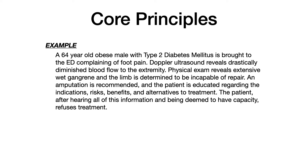Here's the example. A 64-year-old obese male with type 2 diabetes mellitus is brought to the emergency department complaining of foot pain. Doppler ultrasound reveals drastically diminished blood flow to the extremity. Physical exam reveals extensive wet gangrene and the limb is determined to be incapable of repair. An amputation is recommended and the patient is educated regarding the indications, risks, benefits, and alternatives to treatment. The patient, after hearing all of this information and being deemed to have capacity, refuses treatment.